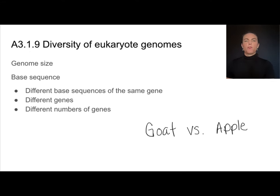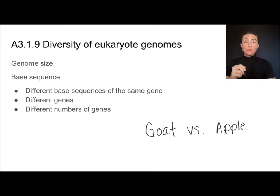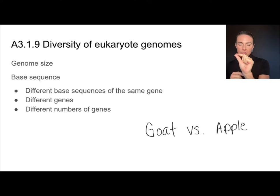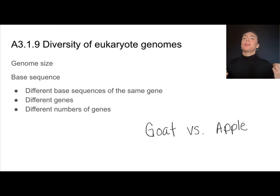Let's talk about two very different things: a goat and an apple. Both of these are going to use DNA as their genetic information, but they may have some differences in terms of their genome size — meaning how many genes they have. And also the base sequences, those patterns of A's, T's, G's, and C's, those might also be different.